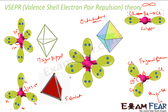These are the basic shapes predicted by the valence shell electron pair repulsion theory. Two electron pairs give linear; three give trigonal planar — assuming no lone pairs on the central atom; four give tetrahedral; five give trigonal bipyramidal; and six give octahedral.